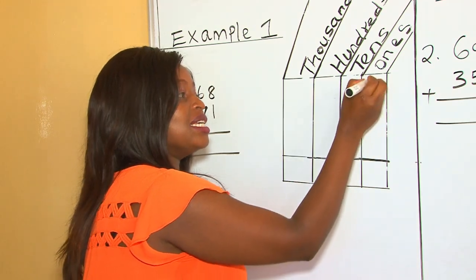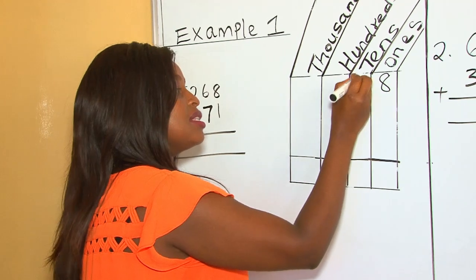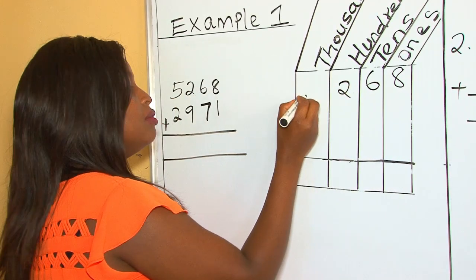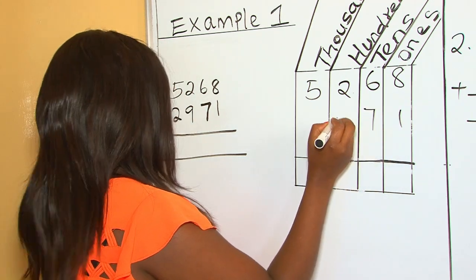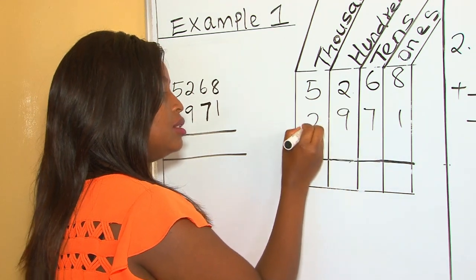So we begin with all ones: 8, 6, 2, 5, 1, 7, 9, 2.